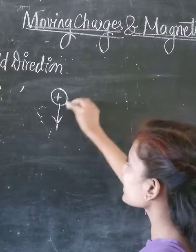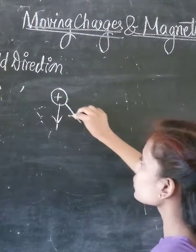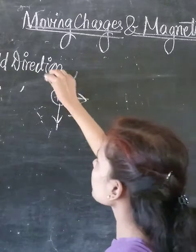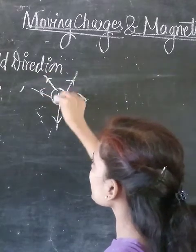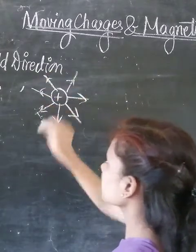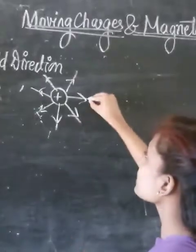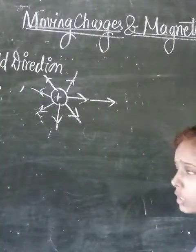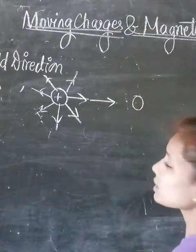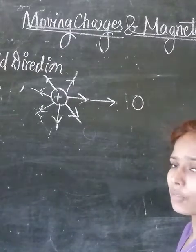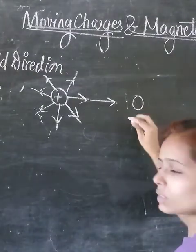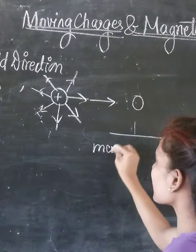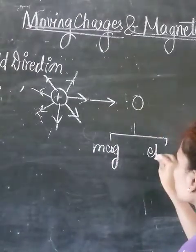This electric field was shown with the help of electric field lines, which are straight lines that move from the positive to the negative direction. And whenever this charge starts moving in accelerated motion, it produces a magnetic field.